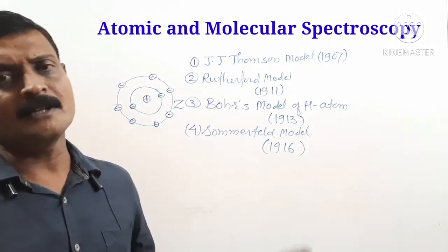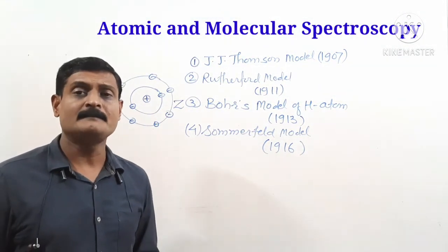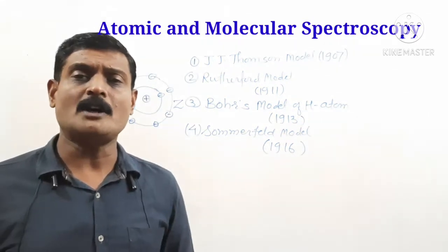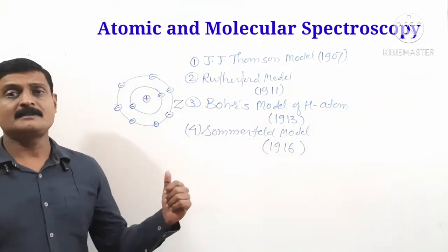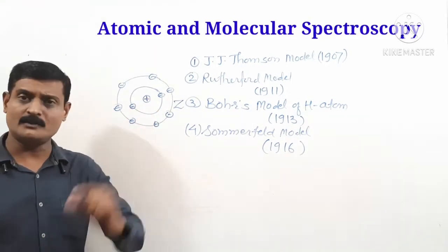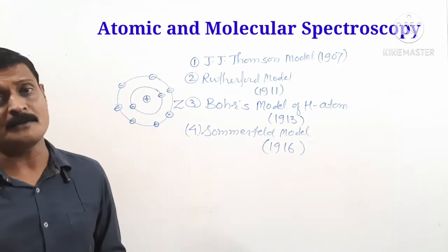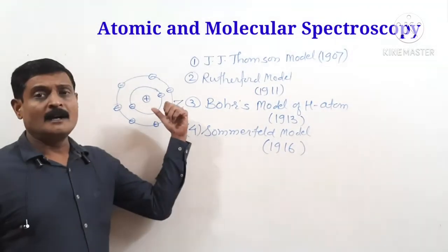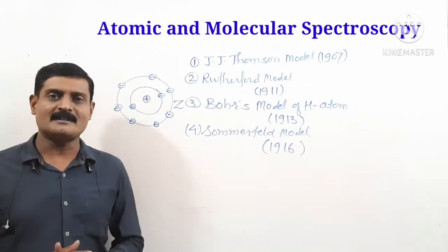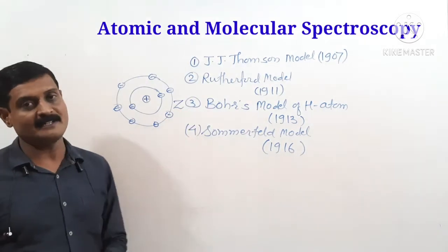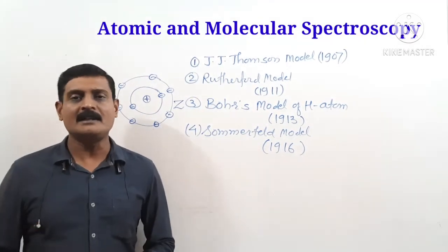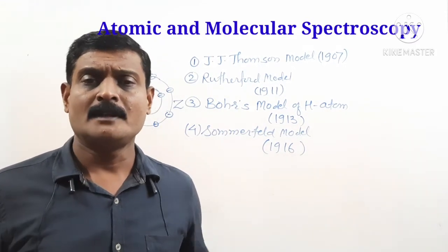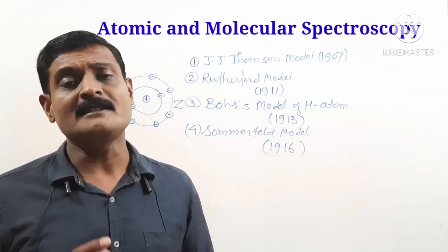The Rutherford model was given in 1911. According to Rutherford, the atom consists of a positively charged central core called the nucleus. Almost all the mass and almost all the positive charges of the atom are concentrated in the nucleus. The nucleus consists of protons, and the number of protons is called the atomic number, denoted by Z. Electrons revolve in circular orbits around the nucleus.